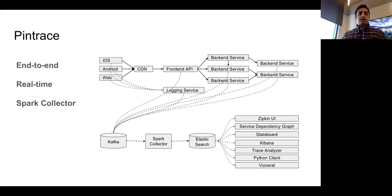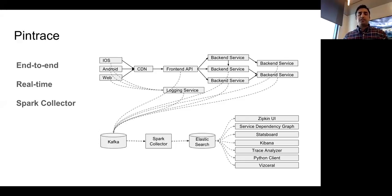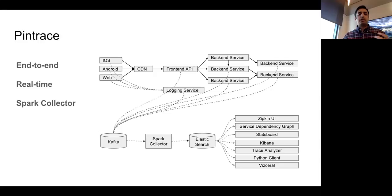Third, we built a Spark collector to consume data from Kafka and push it to Elasticsearch, with additional post-processing for feature extraction, data cleaning, and blacklisting. The collector currently processes at span level. We're planning to add windowing in Spark so we can do post-processing at the trace level — we need a window of about one minute to collect all spans for a given trace before processing them together.